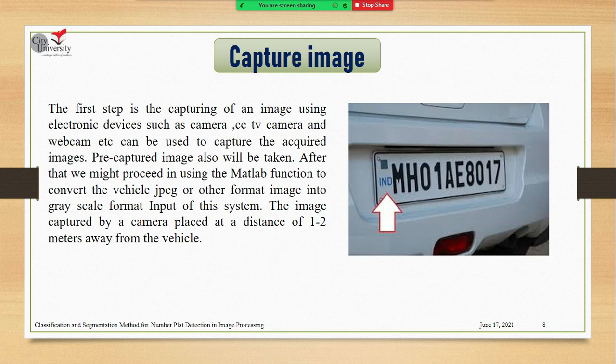In this slide I'm describing the capture image step, because capturing the image is the very first process for our system. The first step is the capturing of an image using electronic devices such as cameras, CCTV cameras, webcams, etc. Pre-captured images will also be taken in our system. After that, we will use MATLAB functions to convert vehicle JPEG or other format images into grayscale format. These captured images must be taken from a distance of one to two meters away from the vehicle.